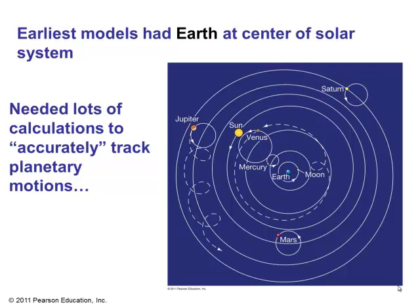Everybody just took the geocentric model for granted. Only the five planets visible to the naked eye — Mercury, Venus, Mars, Jupiter, and Saturn — are shown in this picture. The planets' deferents were considered to move on spheres lying within the celestial sphere that held the stars. The celestial sphere carried all interior spheres with it, but the planetary and solar spheres had additional motions of their own, causing them to move relative to the stars. As you can tell, this is a rather complicated model.